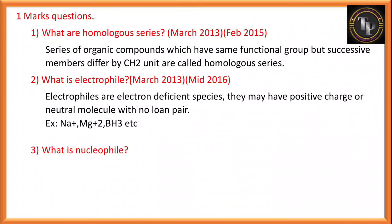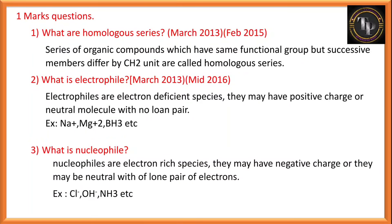What is a nucleophile? It is exactly opposite to an electrophile. Nucleophiles are electron rich species. They may have a negative charge or be neutral with a lone pair of electrons. Examples: Cl minus, OH minus. If you talk about NH3, there is one double dot — that double dot indicates there is a lone pair of electrons.